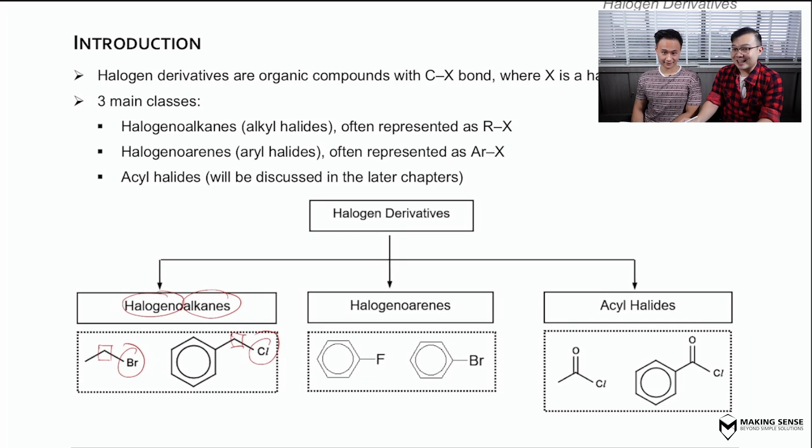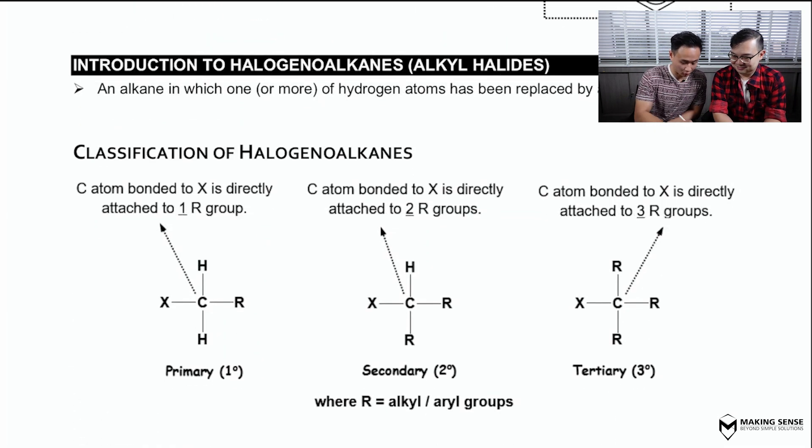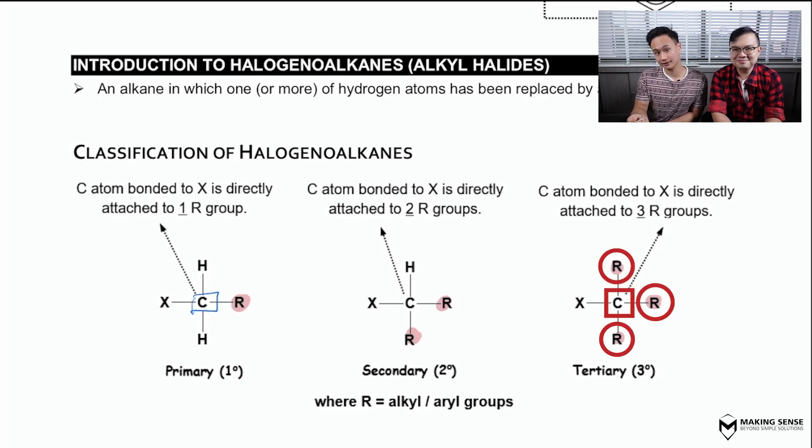Sure thing. Just like how Mr. Leong boxed up the carbon there, we're going to do the exact same thing. Box up the carbon that is holding that halogen there. And Mr. Leong, can you tell me how many R groups we see attached to that carbon? We're looking at directly attached to the boxed up carbon. There's only just one. Now, if it's one R group attached to that carbon, we call it primary. If there are two, secondary. And if there are three, tertiary. That's it.